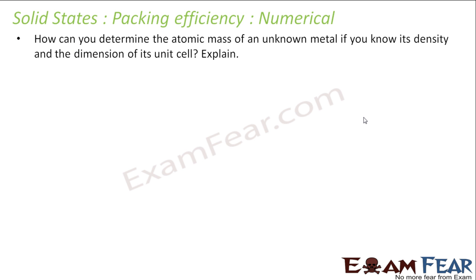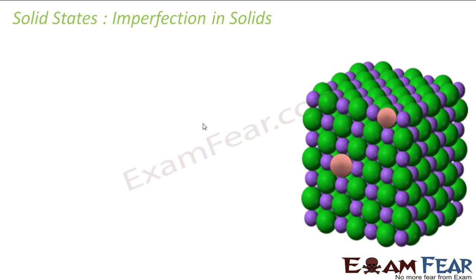The question is: how will we determine atomic mass of a known metal if density and dimension is given? Pretty easy, we have derived this formula: Density = ZM / (Na × A³). So to find atomic mass, density is given, dimension of the unit cell is given, and Na is a constant we know. So we can easily find the molar mass.